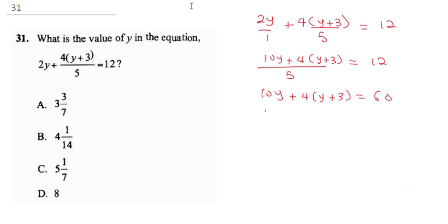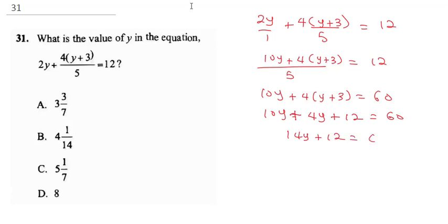Now we open the bracket: 4 times y gives us 4y, and 4 times 3 gives us 12, all equal to 60. So combining like terms, 10y plus 4y gives us 14y, plus 12, equals 60.